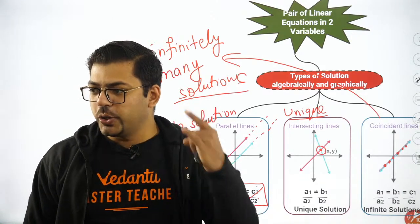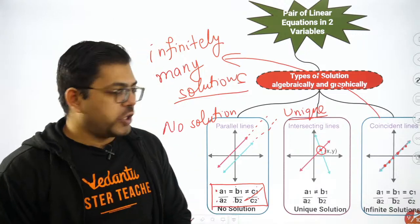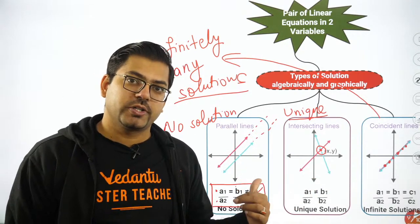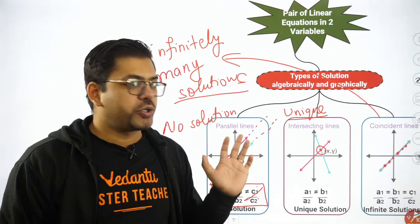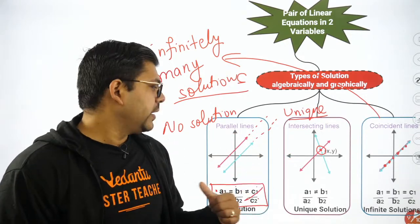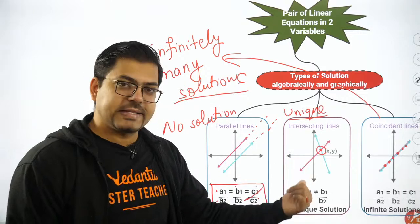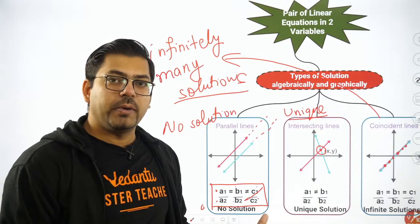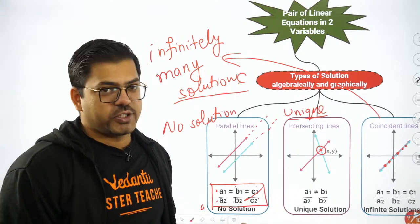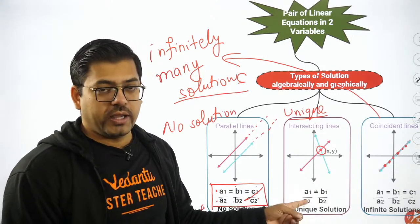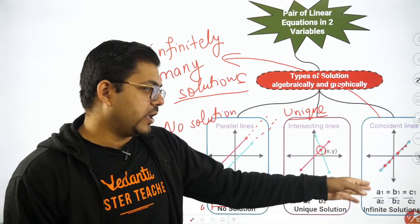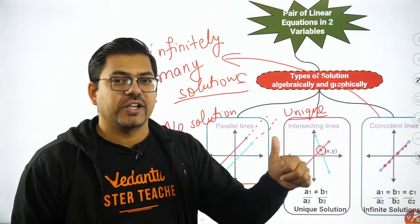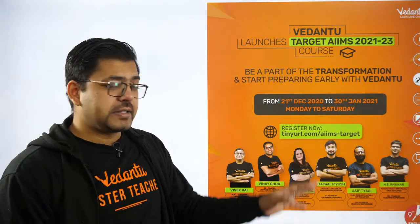So everyone understood — great! These are the three most important conditions and you will definitely get a question from them. Either a parallel line condition: a1/a2 = b1/b2 ≠ c1/c2; or intersecting lines: a1/a2 ≠ b1/b2; or coincident lines: a1/a2 = b1/b2 = c1/c2, all ratios equal.